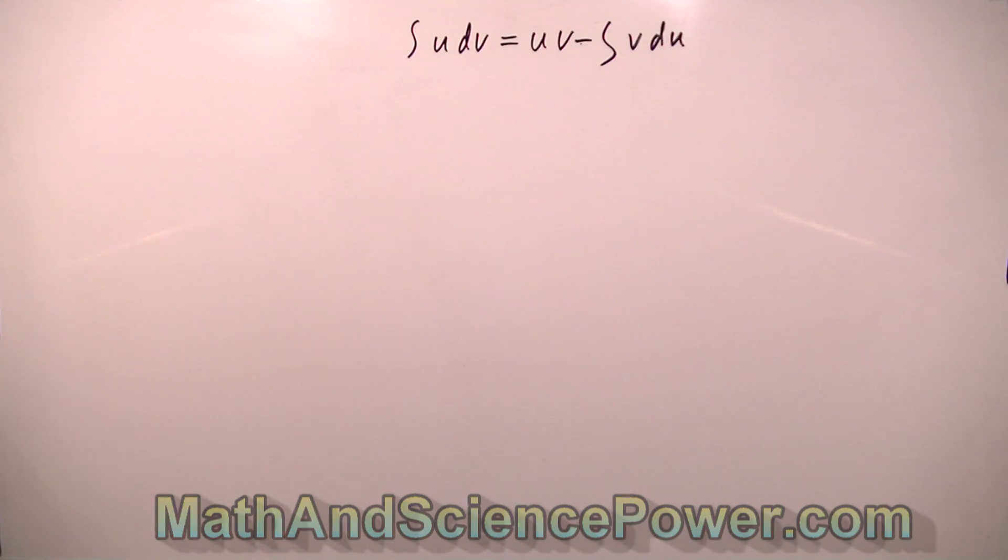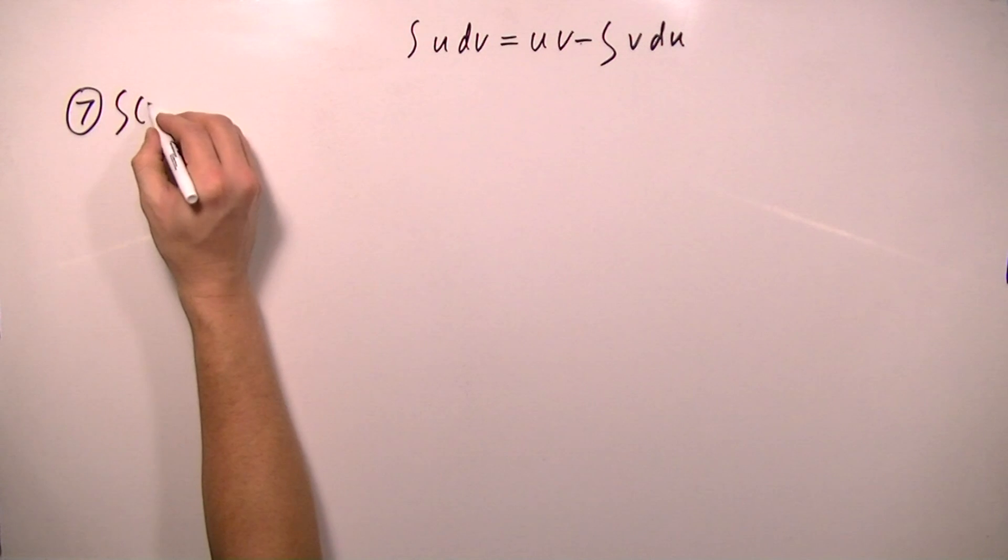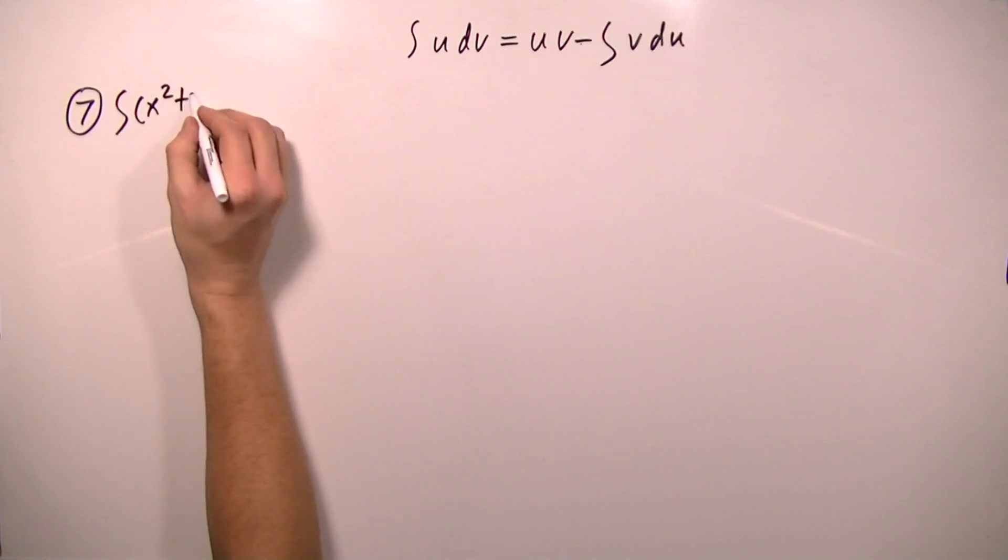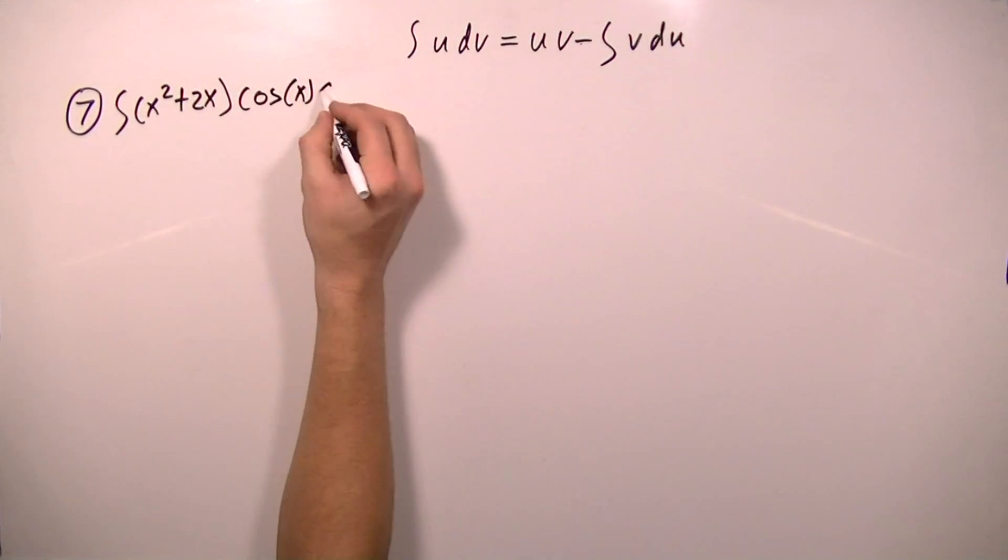Okay, so we're doing integration by parts. And number 7 asks us to find the integral of the quantity of x squared plus 2x times cosine x dx.